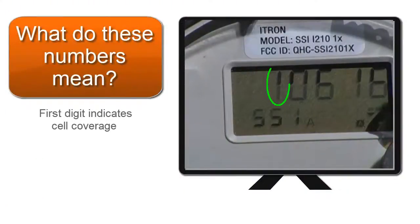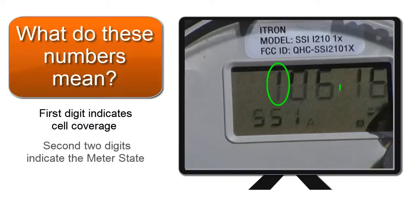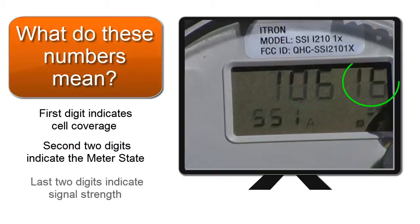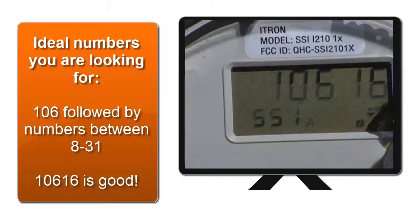So what do these numbers mean? The first digit indicates cell coverage. One is your golden number. The second digit indicates the meter state. 06 is your magic number here. The last two digits indicate signal strength. Numbers 8 through 31 are adequate to connect to the network.